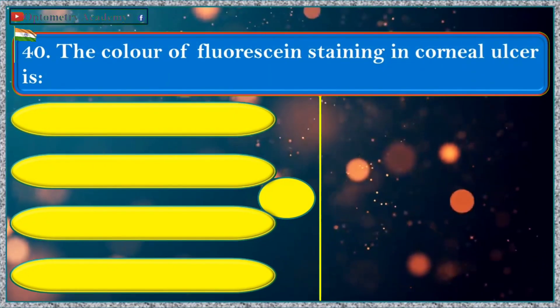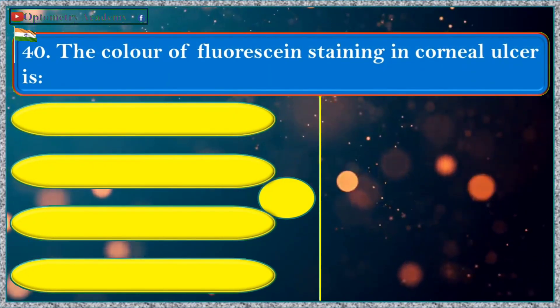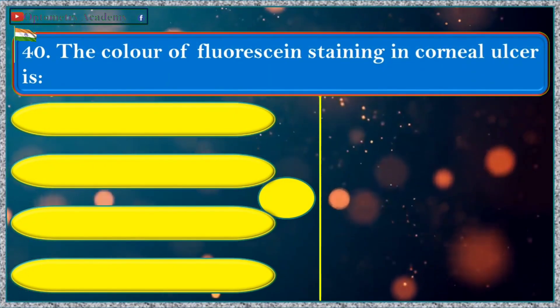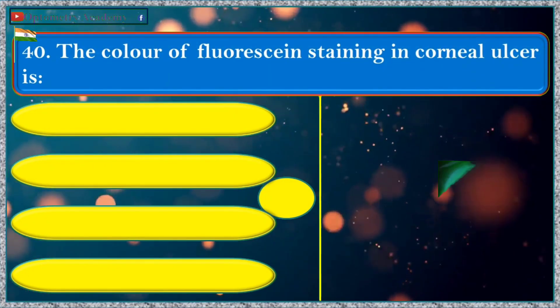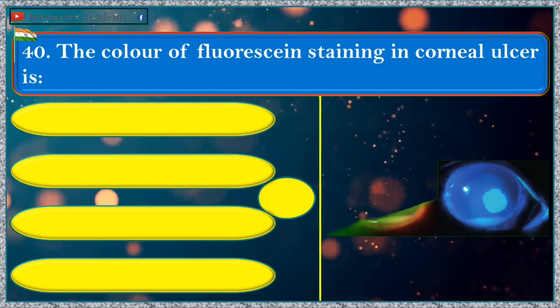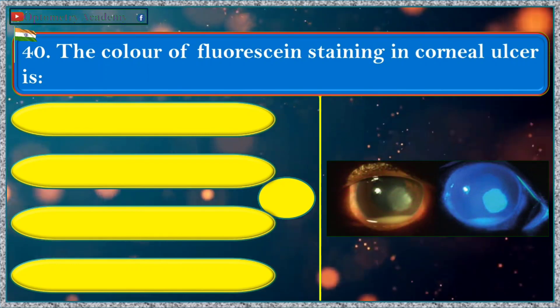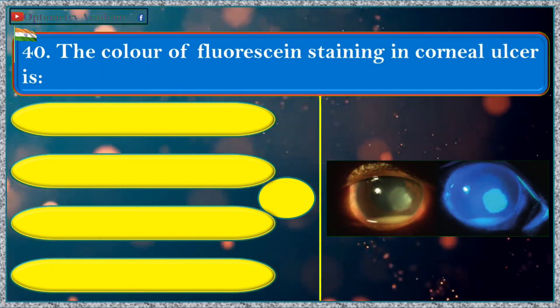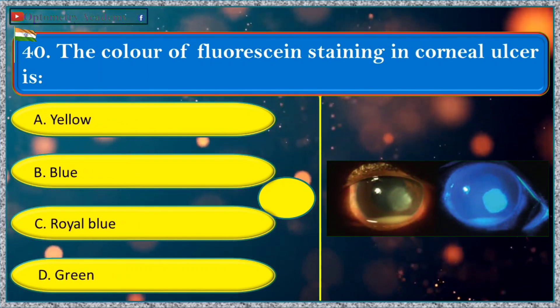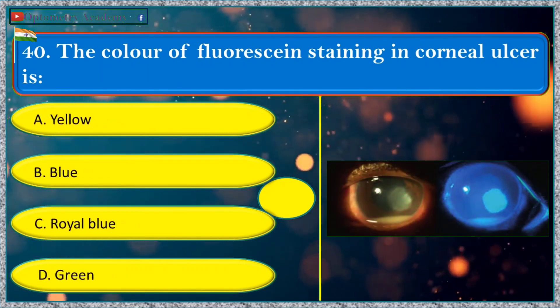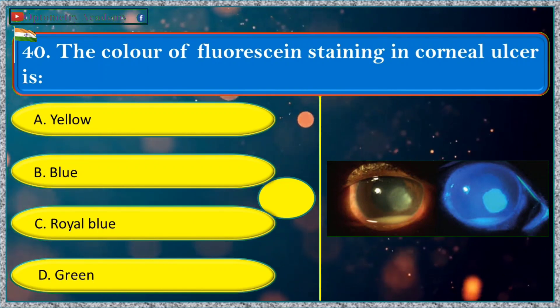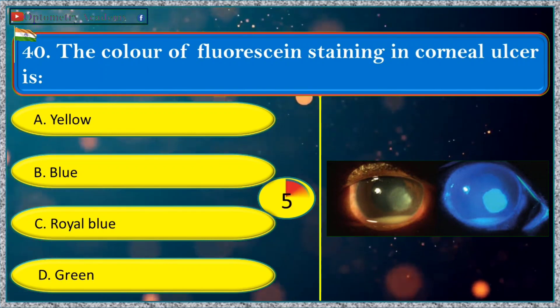The color of fluorescein staining in corneal ulcer is: a. yellow, b. blue, c. royal blue, d. green.